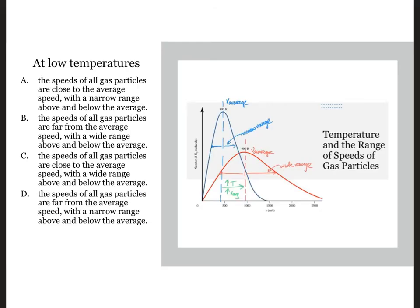The key thing on this slide was to notice that here at low temperatures, we saw that v average was a very sharp peak, and the speeds of the gas particles are all very close to this average. So A was the best answer. This is in contrast to the very high temperatures. We saw at high temperatures that the average speeds of the particles were very broadly arranged around that average velocity.